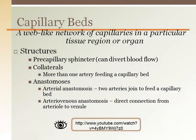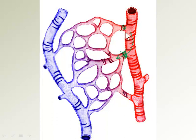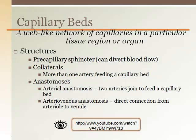Capillary beds are a web-like network of vessels in a particular tissue region or organ. There are muscles that go around the vessel prior to the blood entering the capillary bed that can divert blood flow, called pre-capillary sphincters. Pre-capillary sphincters help to conserve blood because we do not have enough blood to fully serve all body parts simultaneously. For example, if you were to go for a run, blood flow to the intestines would be reduced to allow more blood to serve the working muscles.